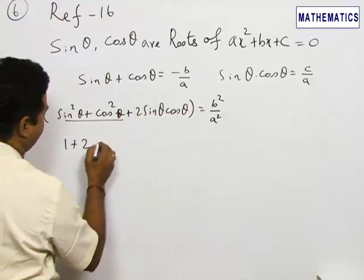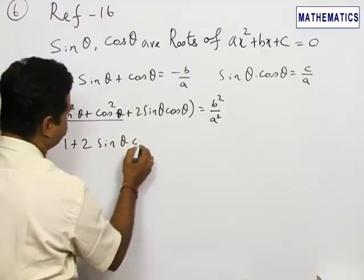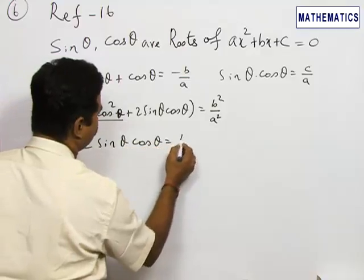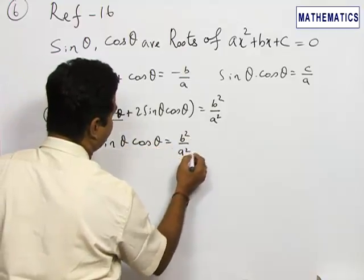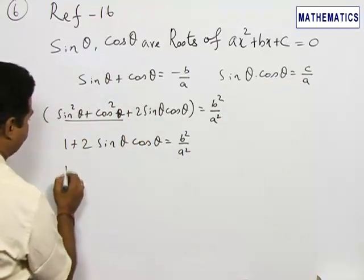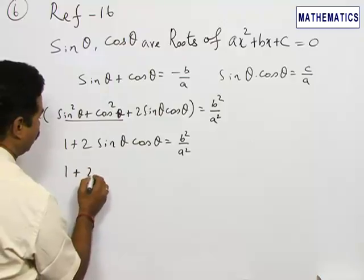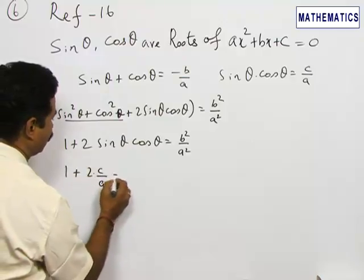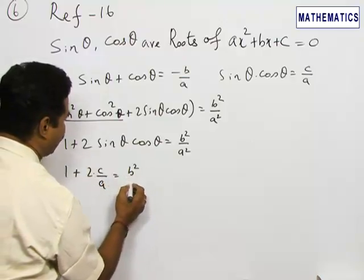1 plus 2 sin θ cos θ is equal to b²/a². We can also use sin θ · cos θ = c/a over here. That is, 1 + 2(c/a) = b²/a².